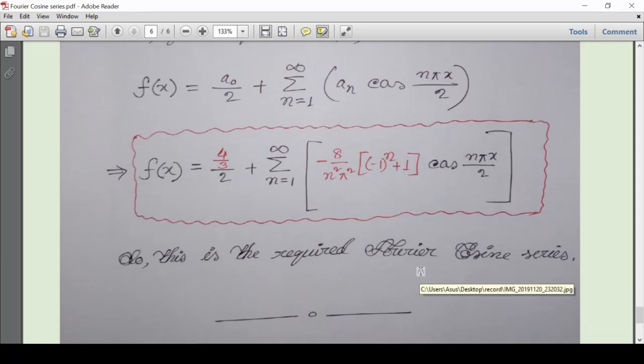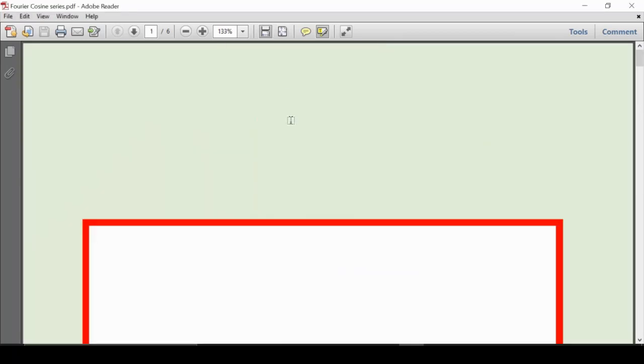That means we have found a Fourier series that contains only the cosine terms. I hope you have got the idea. Thanks to all.